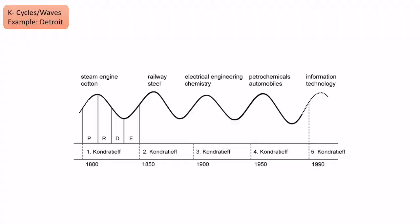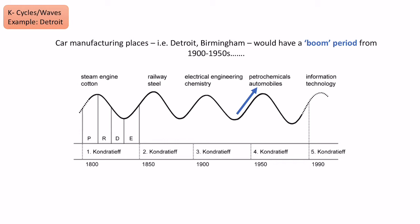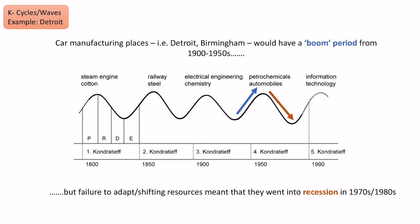Places like Detroit, and similarly in the UK — Birmingham, which we'll talk about later — would have gone through a boom period during the 1900s to 1950s because they were important car manufacturing places and centres of innovation. However, because of a failure to adapt, resources shifting, and what made them unique no longer being important, by the 1970s and 1980s they went into recession. This obviously had impacts for the people and places, especially in terms of inequality.